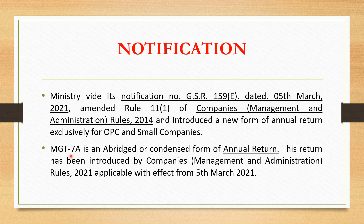The annual return in Form MGT-7 was required to be filed within 60 days from the date of the AGM of the company. But after this amendment, MCA introduced a new form — Form MGT-7A — for OPC and small companies for filing their annual return. MGT-7A is the abridged or condensed form of annual return, introduced by the Companies Amendment and Administration Rules 2021, applicable with effect from 5th of March 2021.